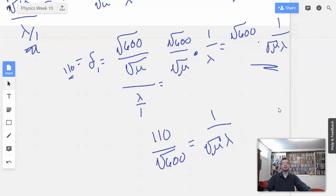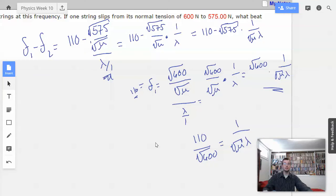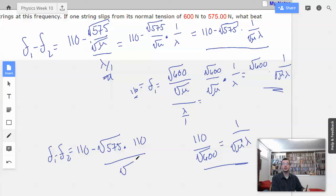I know it felt like magic, and it did to me too, but we're going to see if this works and gives us any sort of a reasonable answer. So this is what our beats are up here, and I'm going to plug this information into it and see if something magical happens. So F1 minus F2 equals 110 minus square root of 575 times 110 over square root of 600.